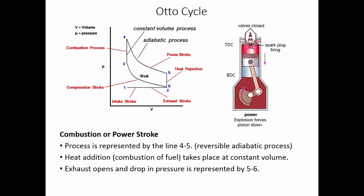Immediately when the piston reaches the bottom dead center, the exhaust valve opens to clear the combustion gases out of the cylinder. When the exhaust valve opens, the pressure drops suddenly back to its initial value — that is, back to atmospheric pressure. This is represented by the sudden drop in pressure from point 5 to point 6, returning to the original pressure level.